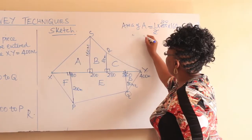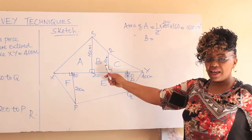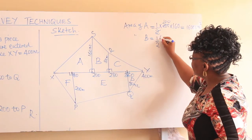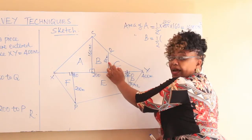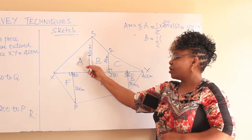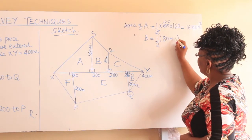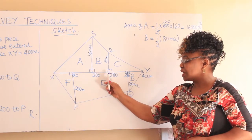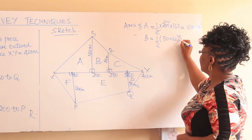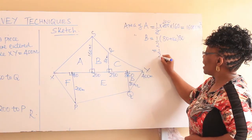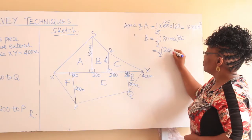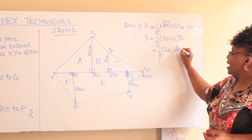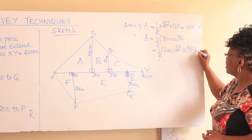We go to B. What is the area of B? B is a trapezium. The area of a trapezium is a half times the sum of the parallel lines, which are 80 and 160, multiplied by the perpendicular. The perpendicular height is 280 minus 200 = 80. So a half times 240 times 80 gives you 9,600 meters squared.